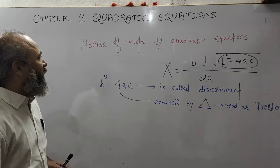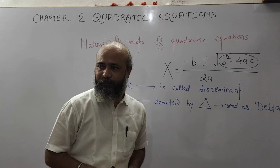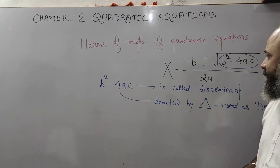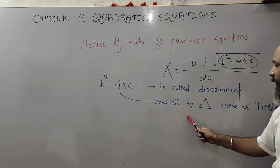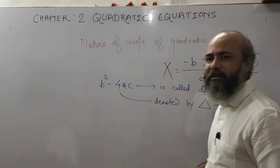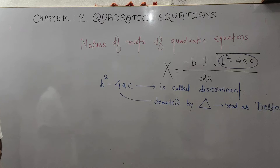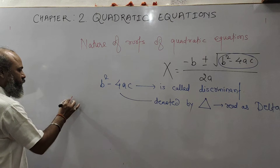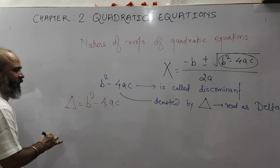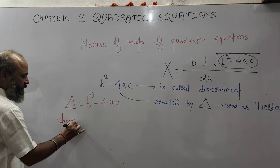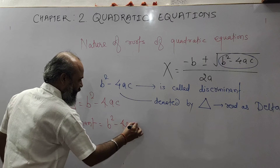To find the nature of roots of a quadratic equation, we use the value of B square minus 4AC, which is called the discriminant. Discriminant is B square minus 4AC, denoted by delta. So delta is equal to B square minus 4AC.